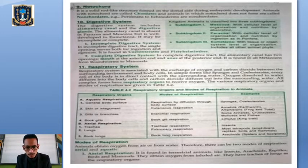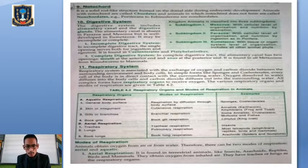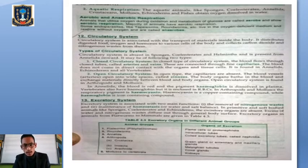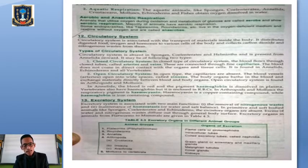The respiratory system helps in the exchange of oxygen and carbon dioxide between the surrounding environment and body cells. We have aerial respiration in terrestrial animals, where specific organs are trachea or lungs. We also have aquatic respiration for animals that respire in water — mainly seen in phylum Echinodermata, sponges, Annelids, and crustaceans, which obtain oxygen dissolved in water.